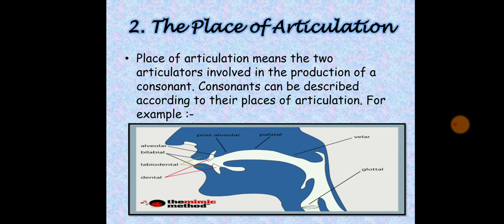The place of articulation. Of the various articulators, at least two are required for the production of any speech sound. Some articulators move during the production of speech sounds — they are active and therefore termed as active articulators. Other articulators remain passive, and the active articulators move in the direction of these — they are termed as passive articulators. The place of articulation, therefore, refers to the two articulators involved in the production of a consonant sound.